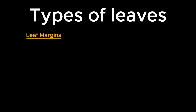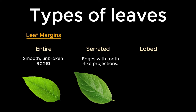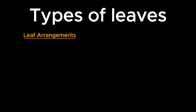Based on margins, leaves are divided into three major categories: entire, serrated, and lobed. Entire leaves have smooth, unbroken edges. Serrated leaves have edges with tooth-like projections. Lobed leaves have edges with deep, rounded, or pointed indentations.